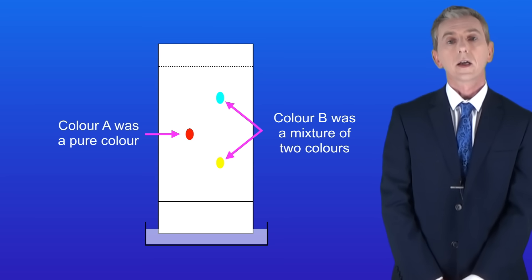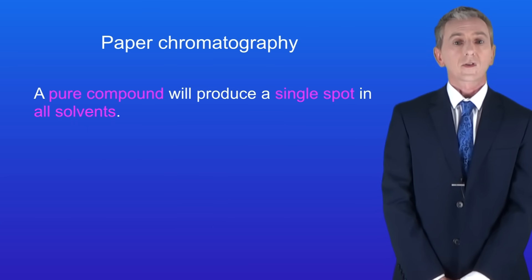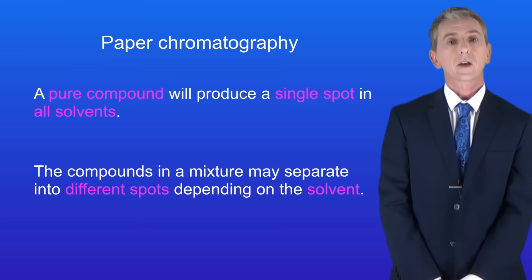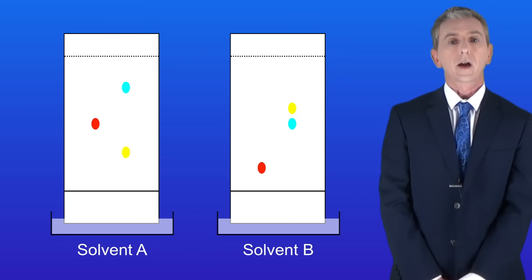So here's another key fact. A pure compound will produce a single spot in all solvents whereas the compounds in a mixture may separate into different spots depending on the solvent. I've shown you that with these two diagrams.